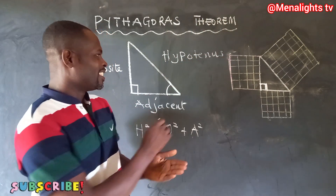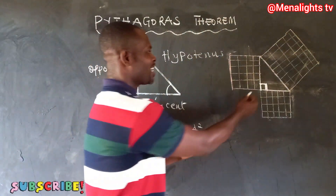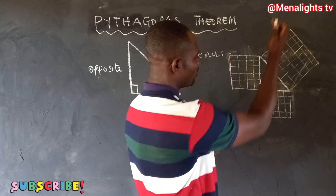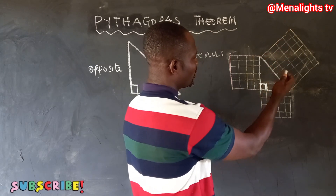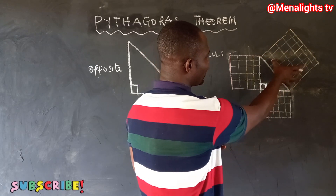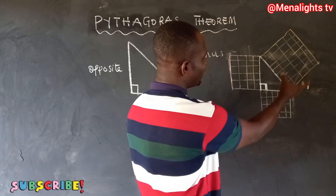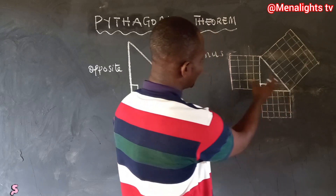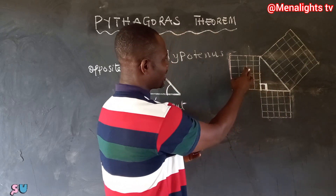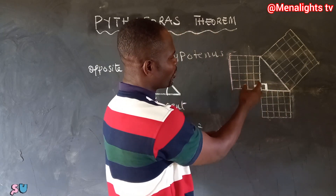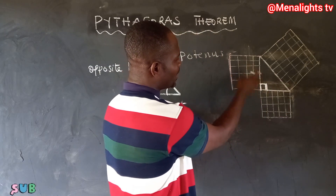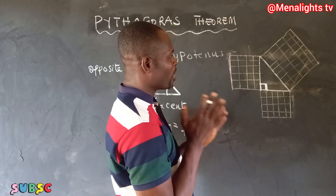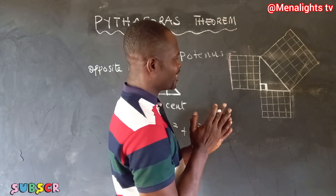The longer side is called the hypotenuse. The square of this side is the same as the square of the opposite plus the square of the adjacent. The opposite and adjacent will depend upon the position of the angle.